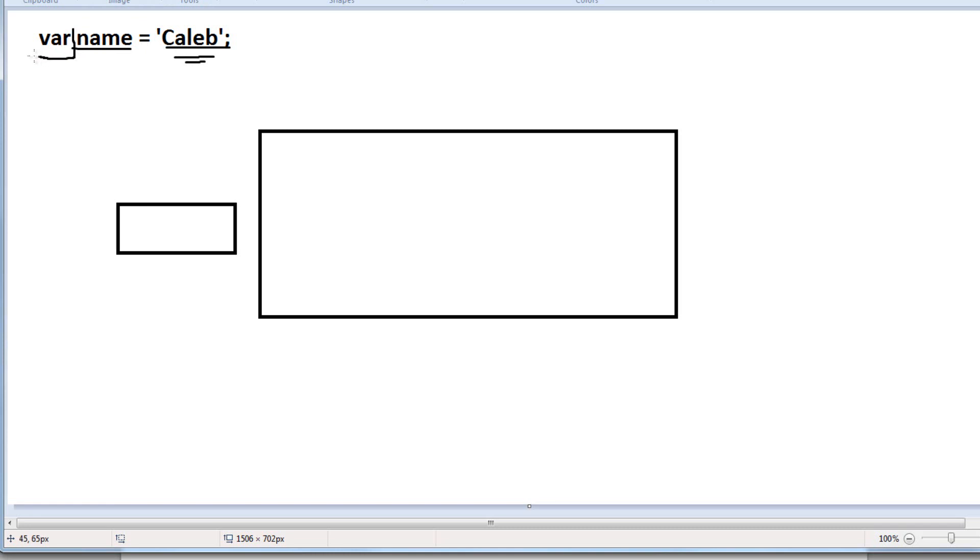Well, the reason we have var here is because we're defining the variable right now. We haven't used it before, so we need to define it. So to define a variable, we say var, and then we say the variable name. So this value is right here, Caleb.